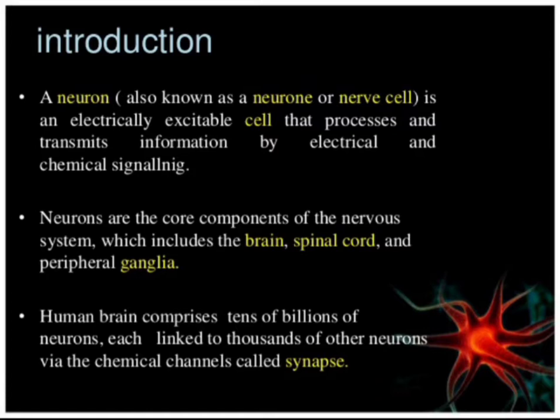The whole functioning of the nervous system depends on neurons. We call them excitable cells because they transmit electrical and chemical signaling information from one part of our body to another.